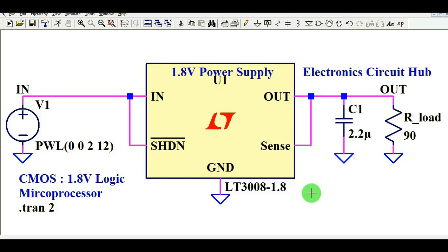Hello friends, welcome to Electronic Circuit Hub. Today we are going to understand about the low voltage power supply design. If I say low voltage, it's a very very low voltage — the output voltage is 1.8 volt. You might have a question: where will this power supply be used, and what is the application of this 1.8 volt power supply?